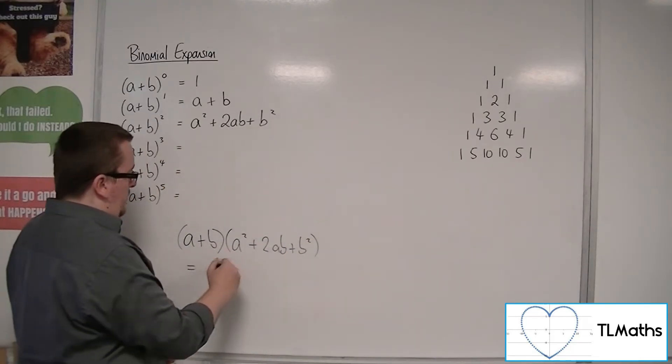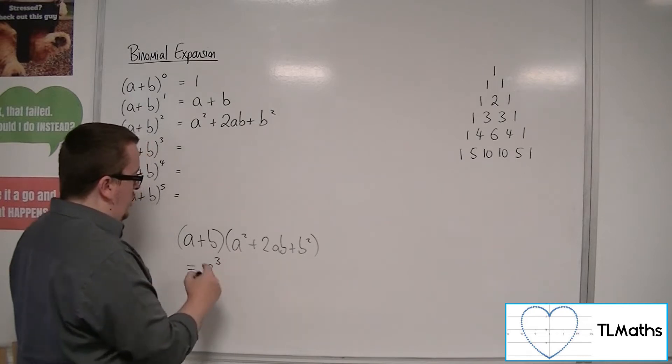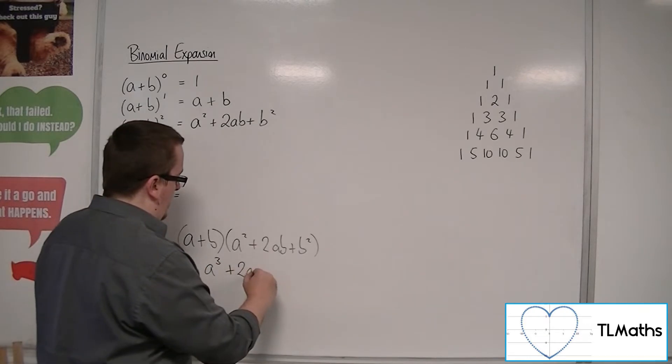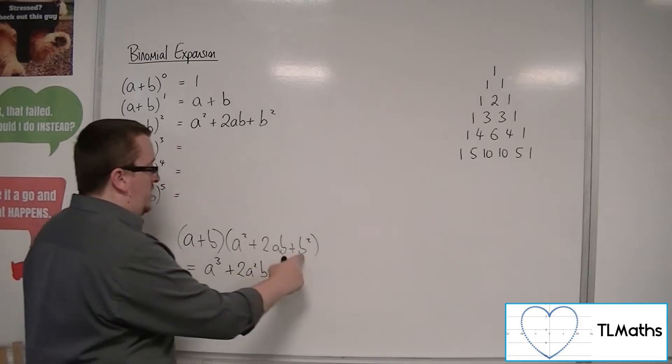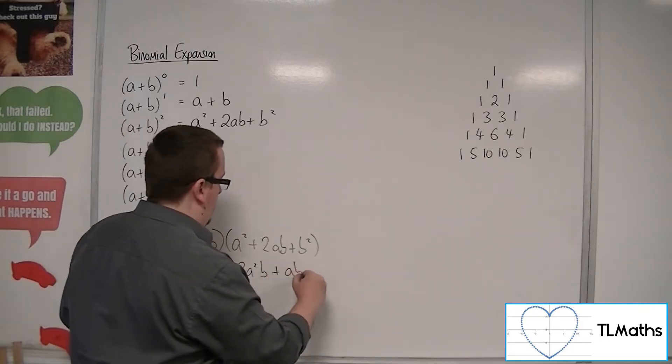So we've got a times a squared, which is a cubed. a times 2ab, so 2a squared b. a times b squared, so ab squared.